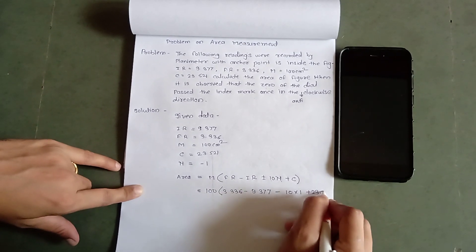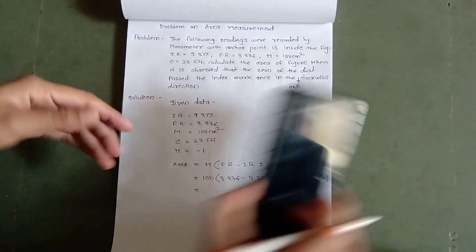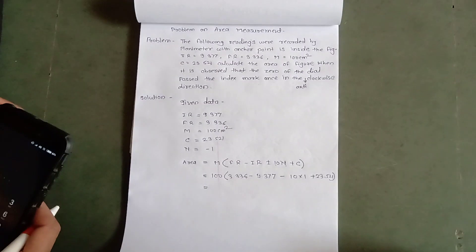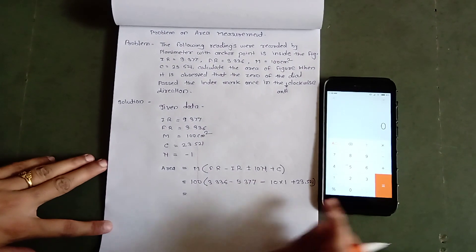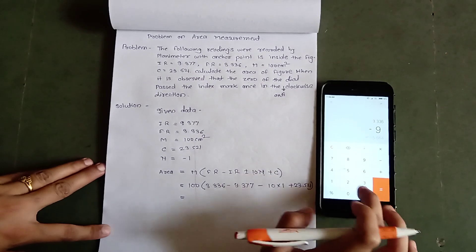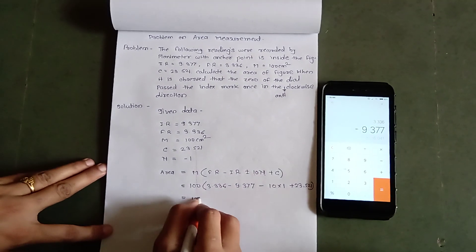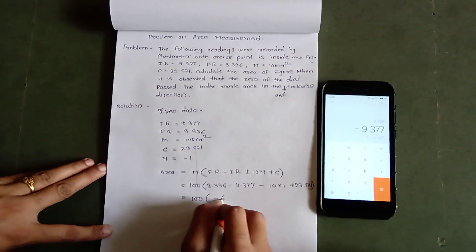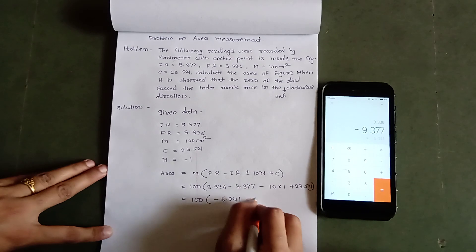Now, we will do the simple calculations. First, the subtraction 3.336 minus 9.377 which equals minus 6.041 minus 10 into 1.